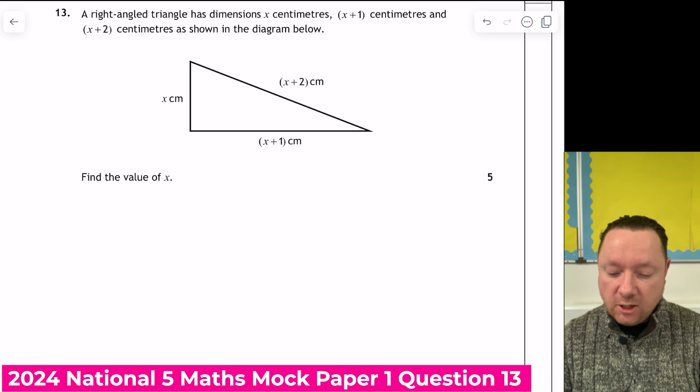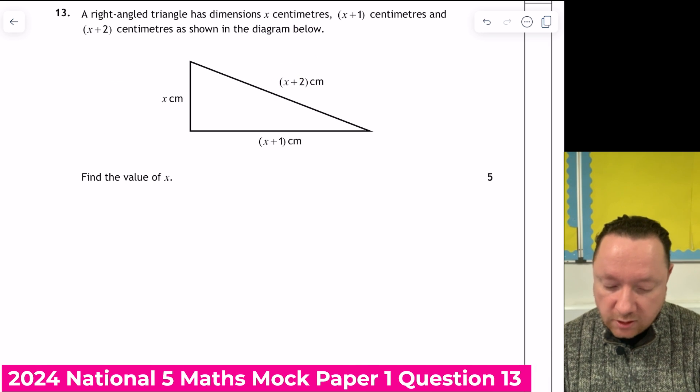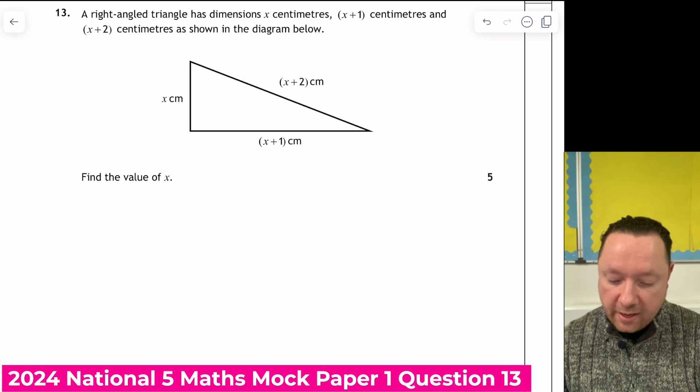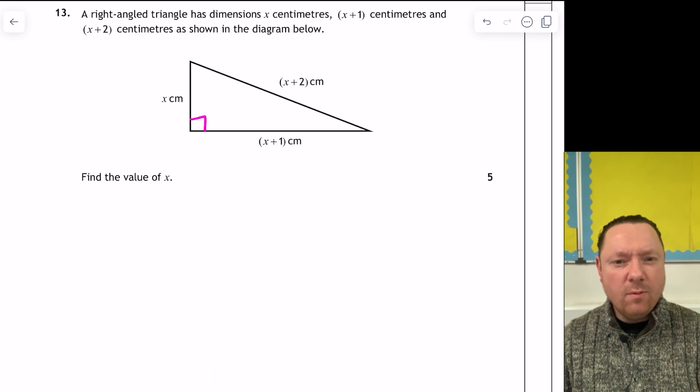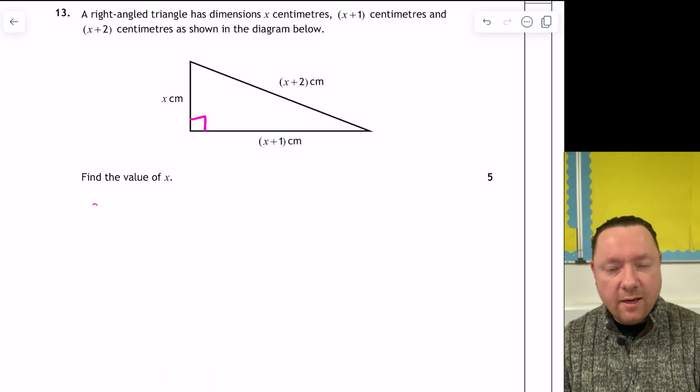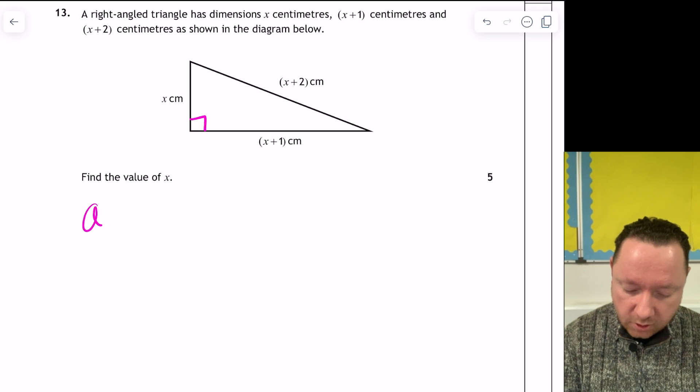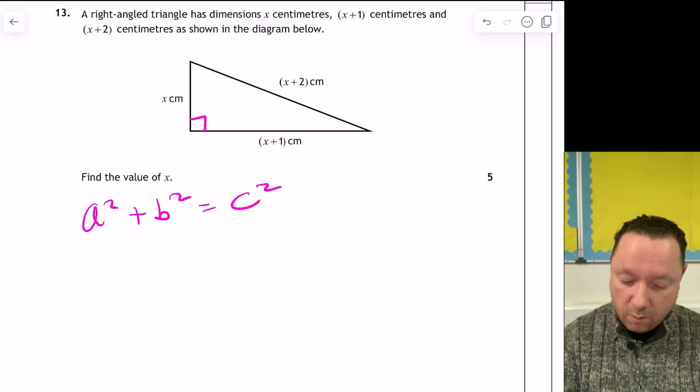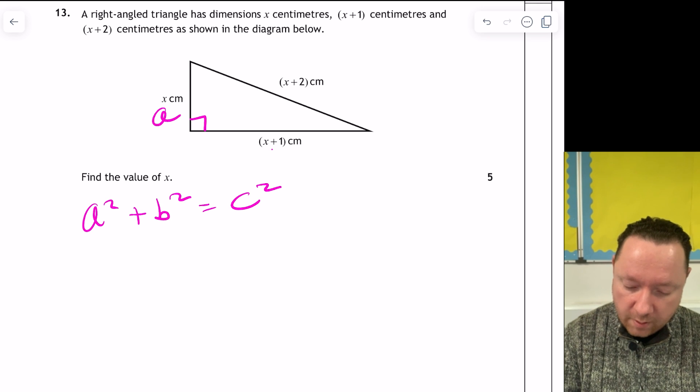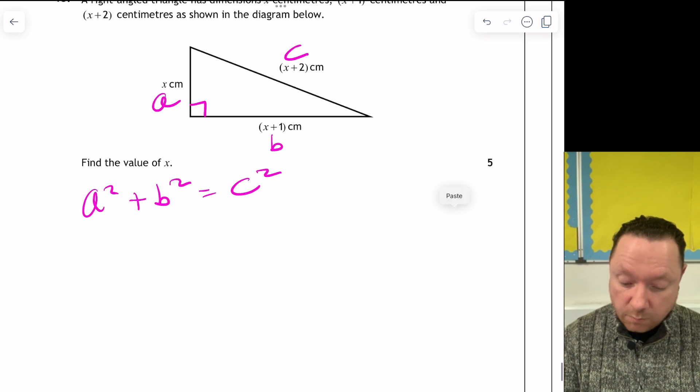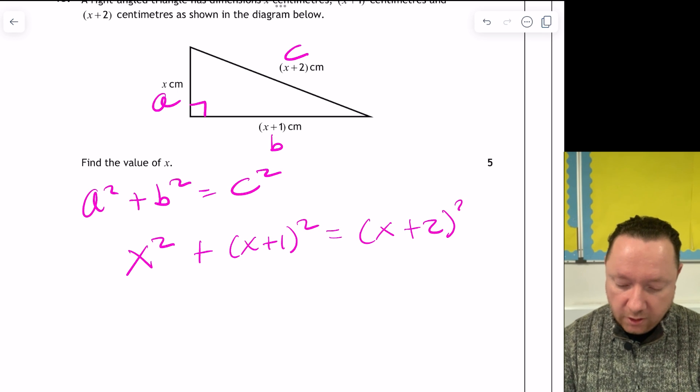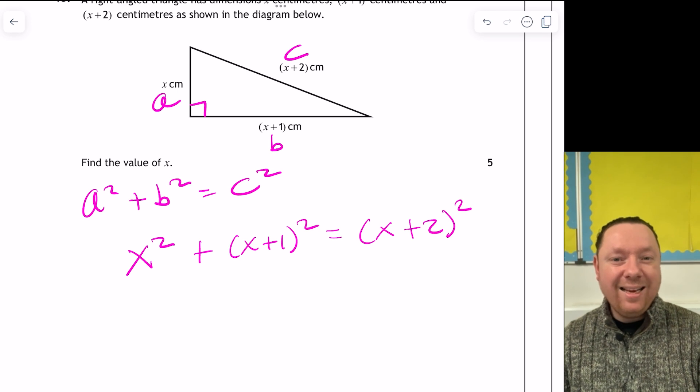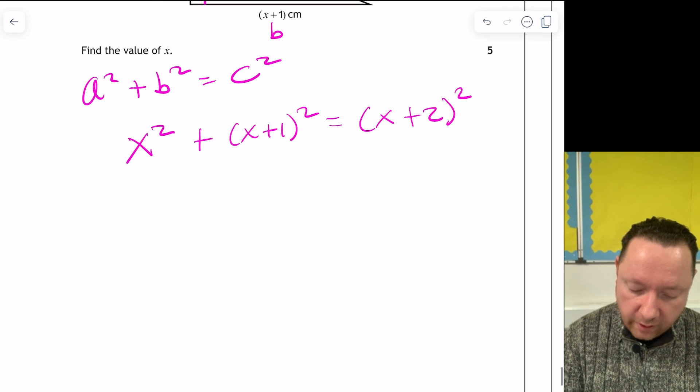Question 13. A right angle triangle has dimensions x centimetres, x plus 1 centimetres and x plus 2 centimetres, as shown in the diagram below. Find the value of x. What it tells me is a right angle triangle. So this is Pythagoras mixed in with a bit of algebra. So what does Pythagoras say? It says that a squared plus b squared equals c squared. So I'll just start with that. I'll call that a, I'll call that b. C is always the longest side. So I've just substitution. x squared plus x plus 1 all squared equals x plus 2 all squared.